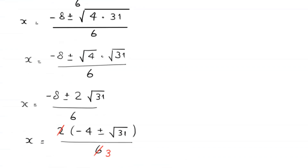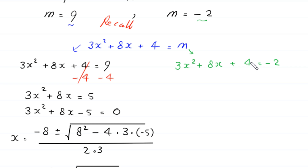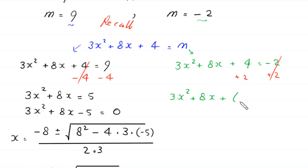Now we solve the second case. When m is equal to negative 2, this equation will become 3x squared plus 8x plus 4 equals negative 2. We add 2 to both sides, so this becomes 3x squared plus 8x plus 6 is equal to 0.